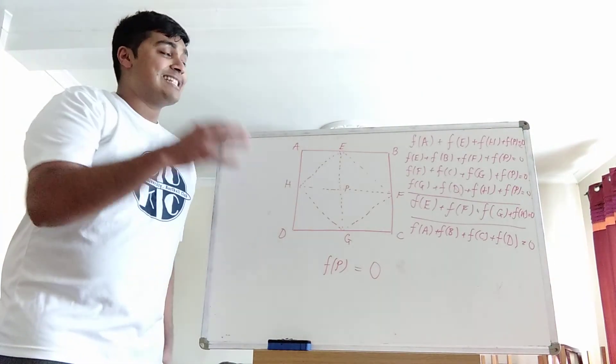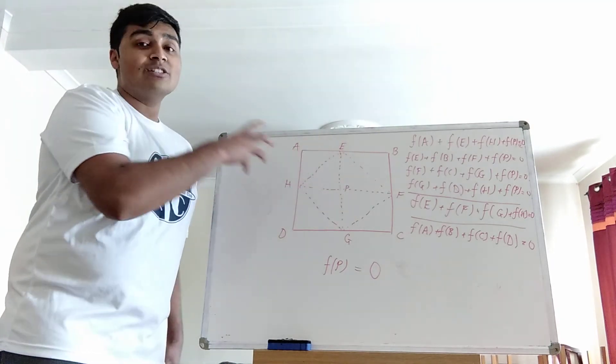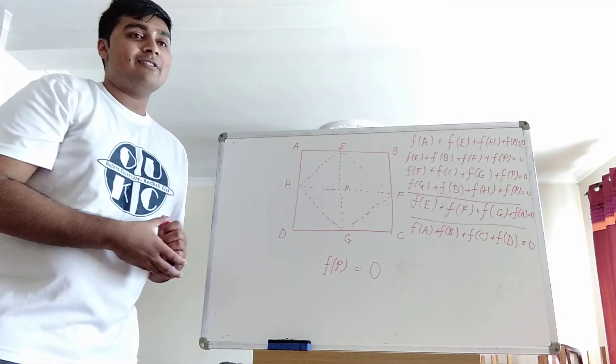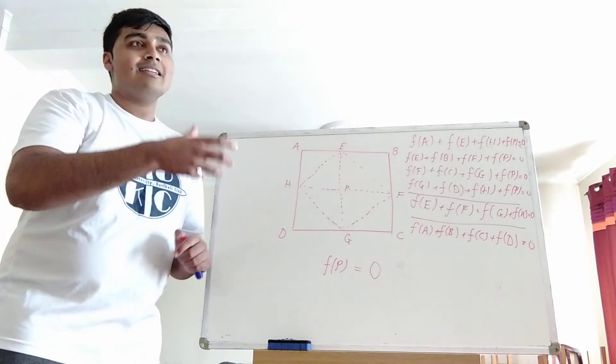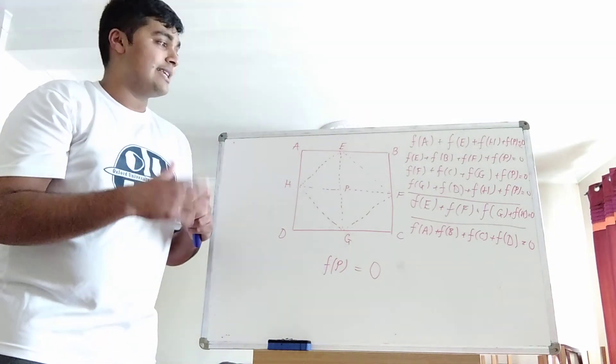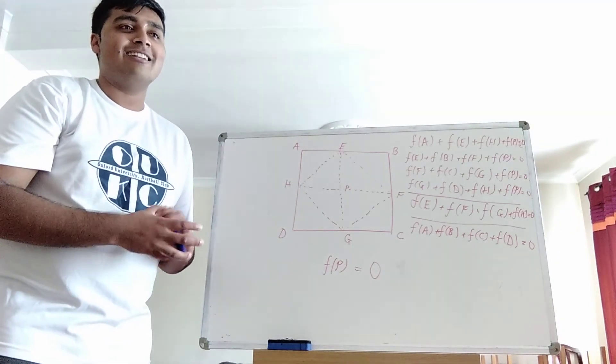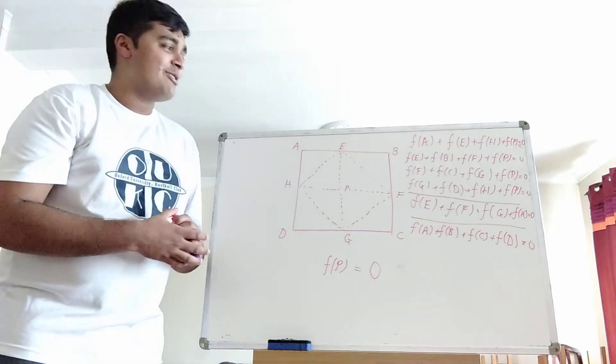If you want a bit of an extended problem, change the problem slightly. So instead of looking at squares, you're looking at triangles. So f is now a function such that when you take any equilateral triangle and you add it at its vertices, you always get zero. And then does it also have this? And the question is, does it have this property? It must f identically be zero. That's a little challenge for you.